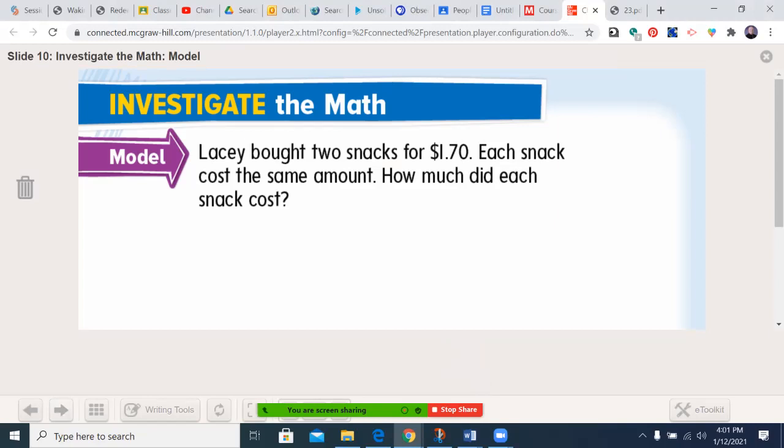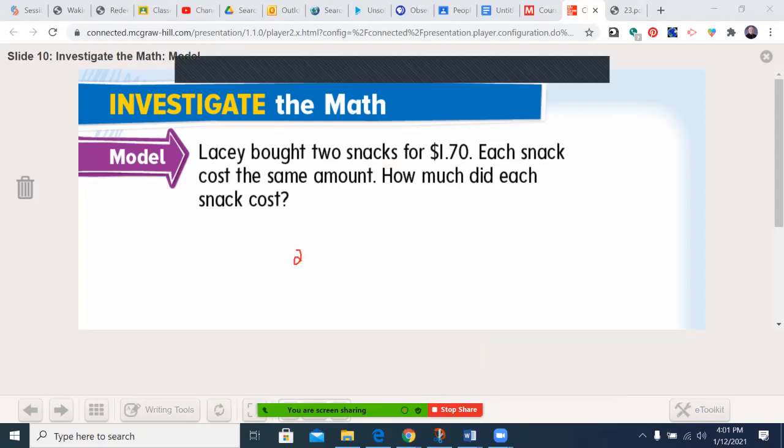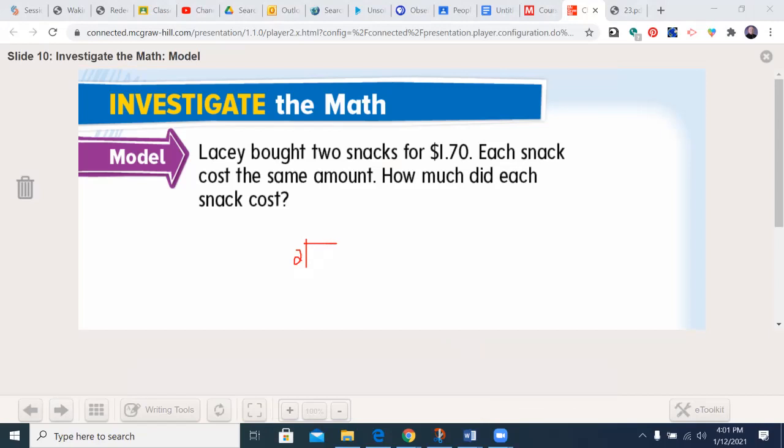Lacey bought two snacks for $1.70. Each snack costs the same amount. How much do they cost? Let's use our standard algorithm. There are two snacks and it became $1.70. I immediately start by doing this so I don't forget. And because two doesn't go into one, I'm going to put a zero there just for place value purposes. It's not a requirement, but not a bad idea right now, especially when it's in the ones place.